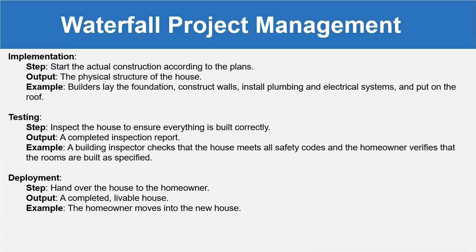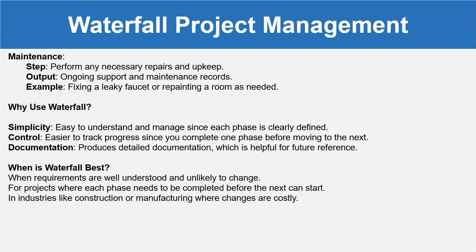Then deployment means handing over the house to the homeowner. The output is a completed, livable house — for example, the homeowner moves into the new house. The maintenance phase then comes, in which we perform any necessary repairs and upkeep. The output is ongoing support and maintenance records — for example, fixing a leaky faucet or repairing a room as needed.